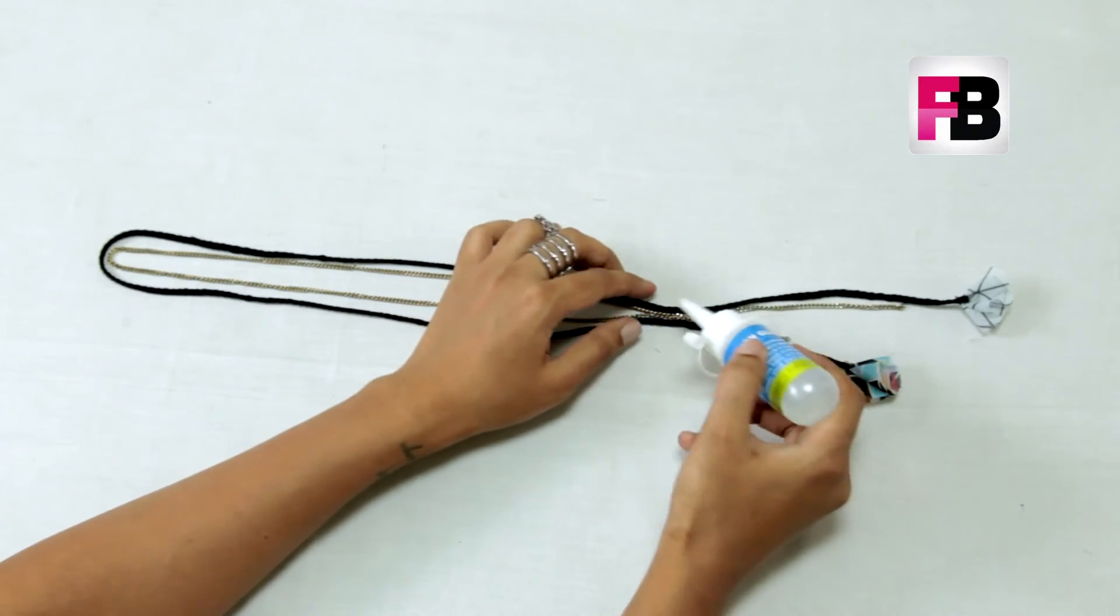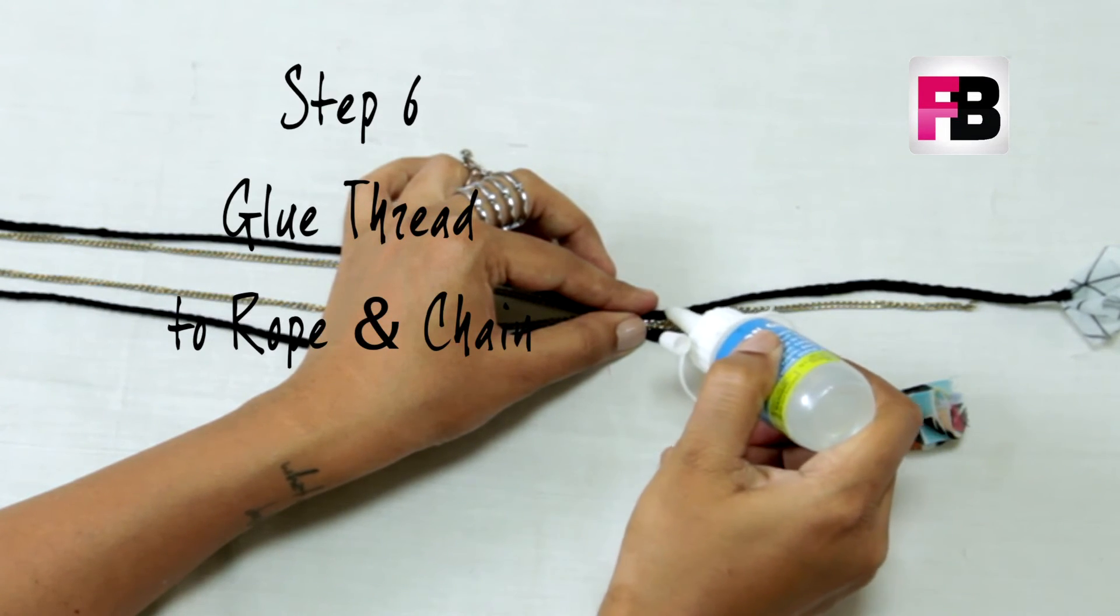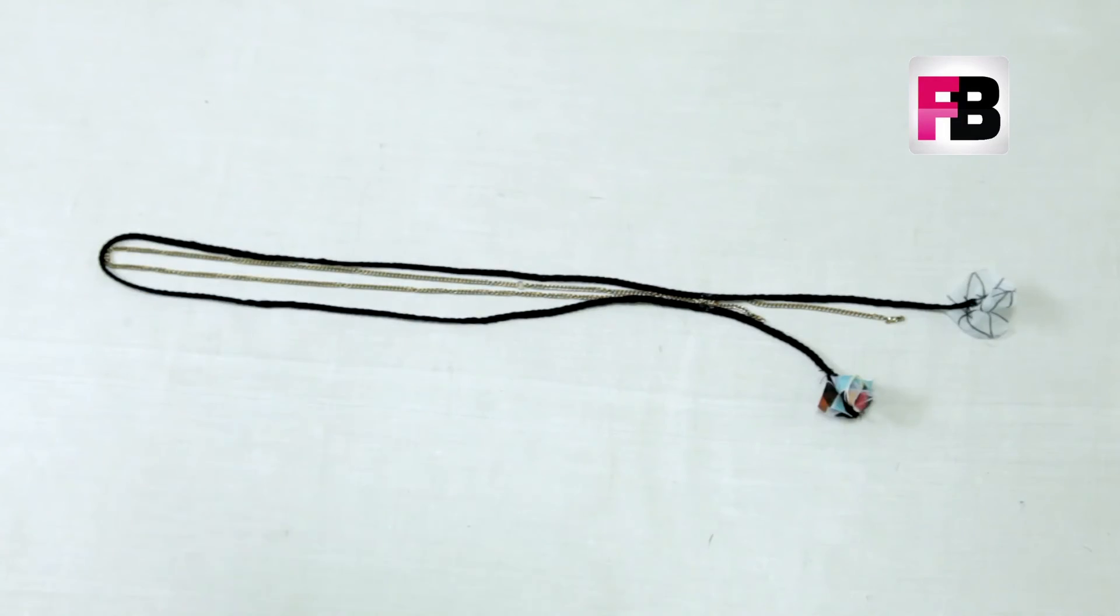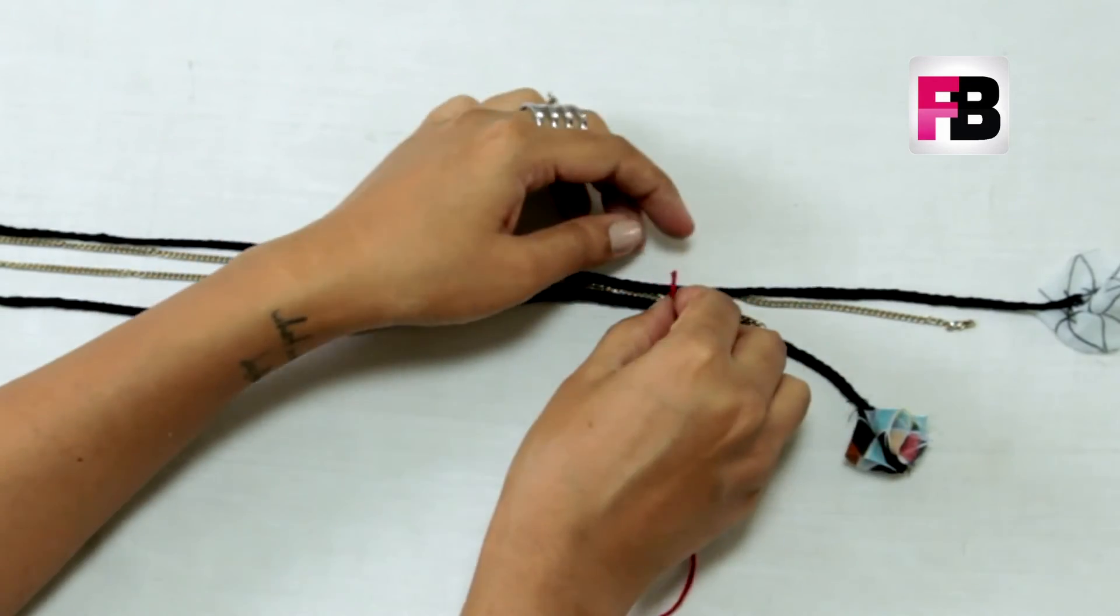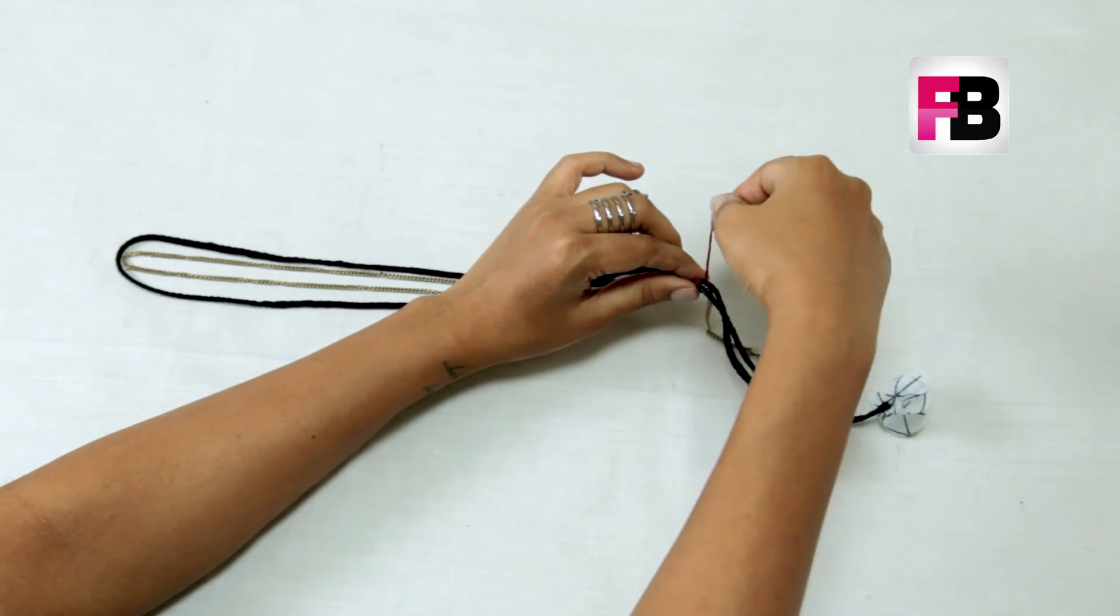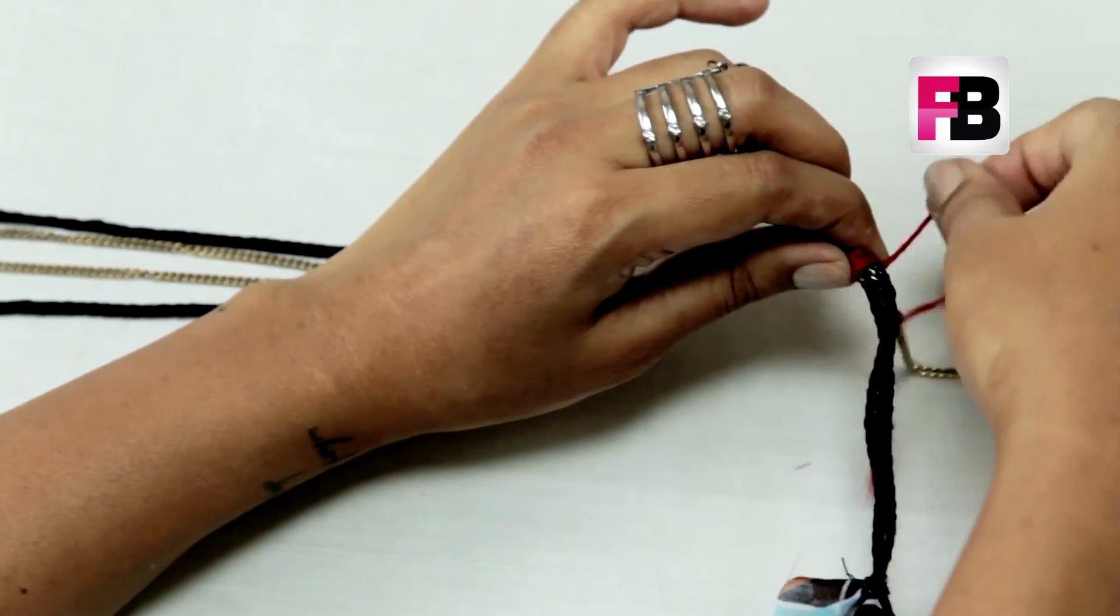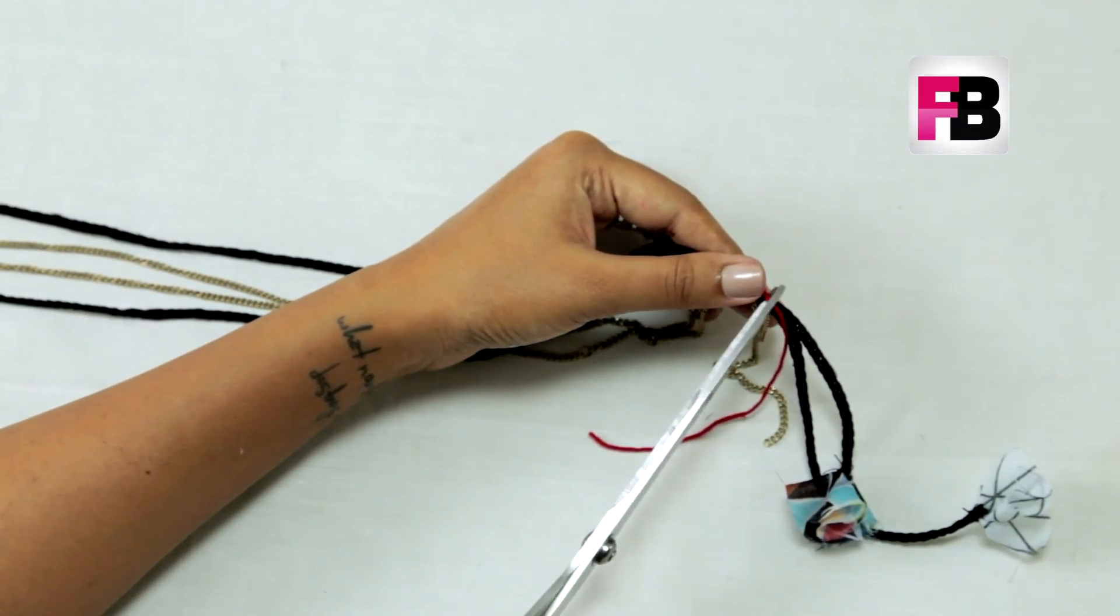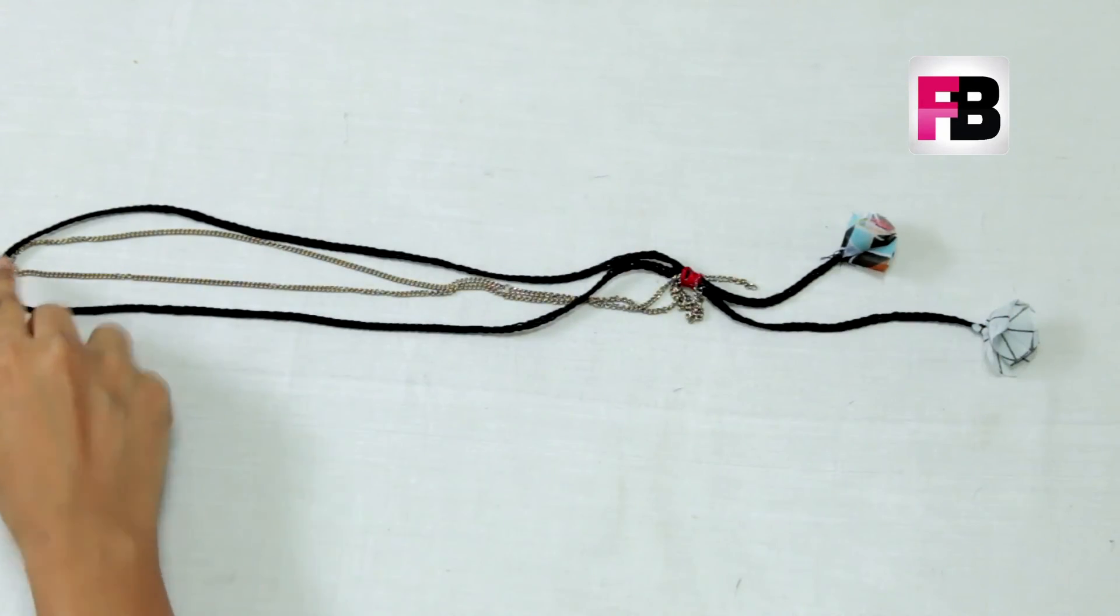Now since it's a bit dry, I'm going to be using this thread, a red one. Lift it up, roll it around tightly. The thread will stick too because of the glue. Cut the end. Now similarly we'll tie one knot here, one knot here, and one here.